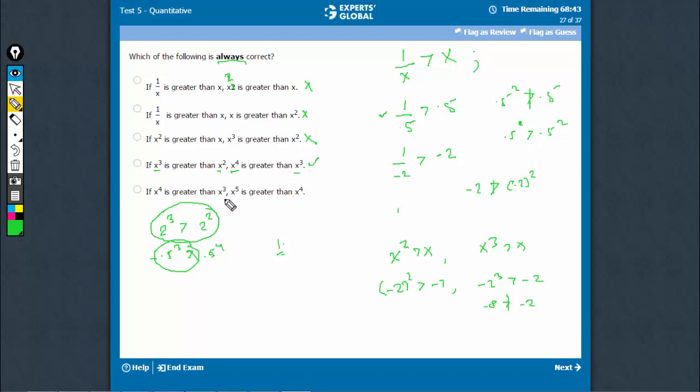If x raised to power 4 is greater than x raised to power 3, this is possible in two cases. One is 2 raised to power 4 is greater than 2 raised to power 3. In this case, this is true, but this is also possible in the case when x were a negative number. Minus 2 raised to power 4 is greater than minus 2 raised to power 3, but that does not mean that minus 2 raised to power 5 which is minus 32 is greater than minus 2 raised to power 4 which is 16. This is not true and therefore, E is also incorrect. D is the right answer.